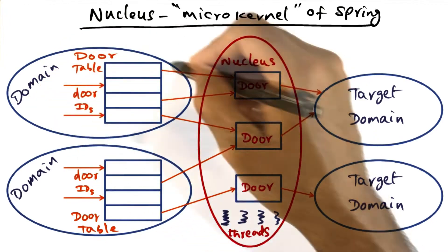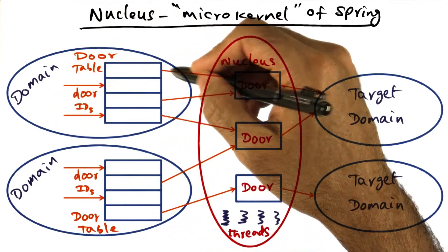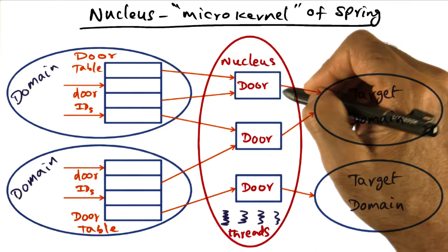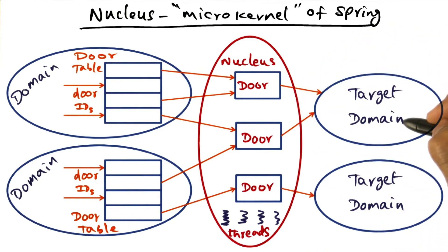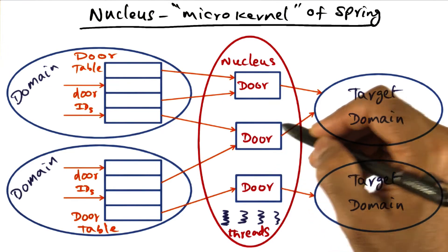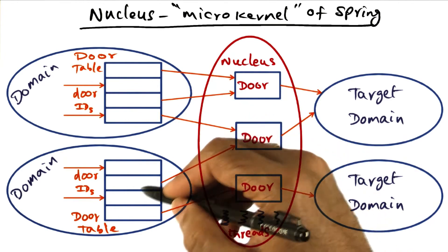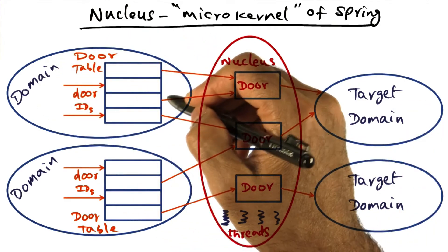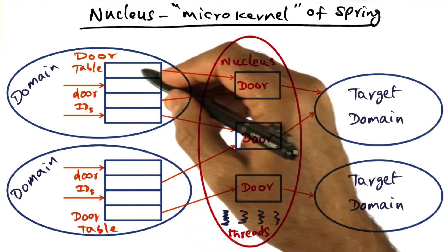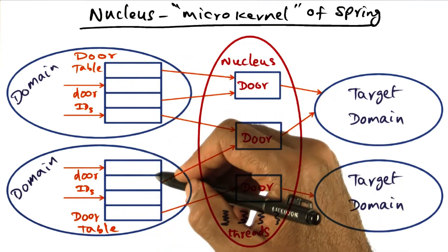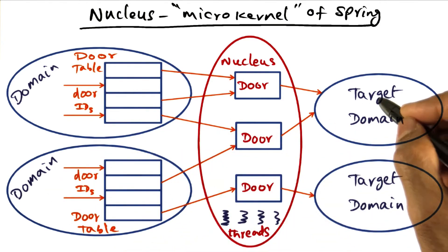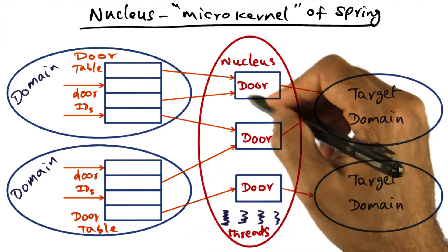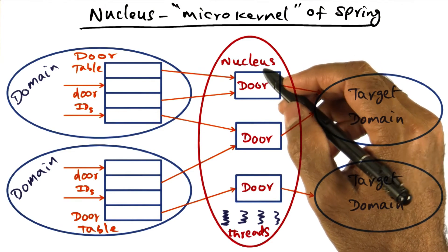The possessor of a door handle is able to make object invocations on the target domain using that door handle. A particular client domain can have a door table with access to several different target domains. Multiple clients may have access to the same door — for instance, if it's a file system, multiple users can access it. The door table is unique to every domain and gives it the ability to access entry points in target domains to make object invocations.